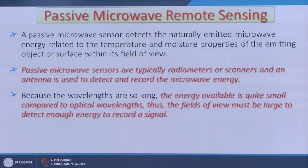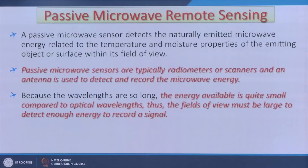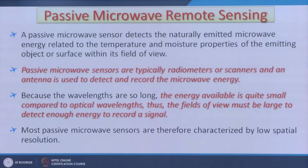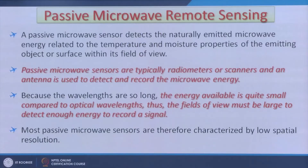Sensors like SSMI and SSMR on board different missions operated in the passive microwave region, but they had relatively very poor spatial resolution — about 30 kilometers. Because of the limited energy available to the sensor, passive microwave never became popular. The field of view must be large to detect enough energy to record as a signal, and that became a problem with them.